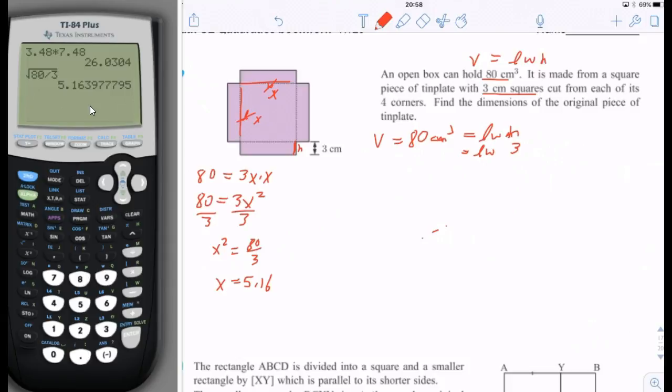So the original tin plate was slightly larger, right? Because if x is 5.16, then the original width and length of the tin plate was 5.16 plus 3 plus 3, because you've got to add the two squares back. So that would be 11.16 centimeters.